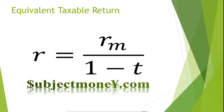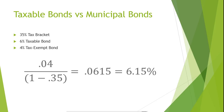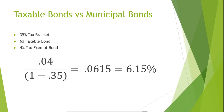The equivalent taxable return increases with higher marginal tax rates. Therefore, tax-exempt municipal bonds are more attractive to individuals in higher tax brackets. If tax-exempt municipal bonds are available at 4% and our tax bracket is 35%, we simply plug in our values to find the equivalent taxable return: 6.15%.